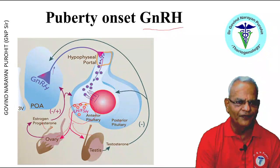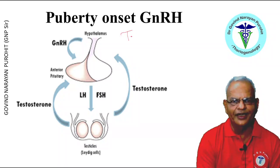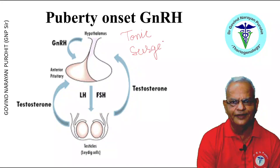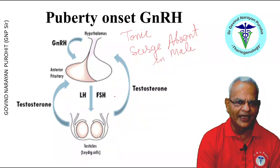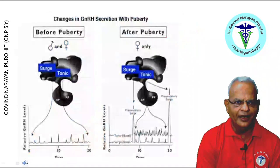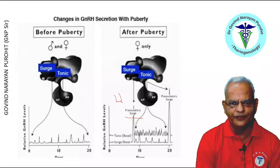The ovaries produce estrogen and the testes produce testosterone. The males do not have a surge center. The secretion of GnRH is of two types, as discussed in a previous class on hormones — a tonic release and a surge-like release. The surge-like release is absent in male animals because they do not require any mechanism such as ovulation. The surge centers are developed after puberty in females, and this leads to a pre-ovulatory surge of luteinizing hormone which causes ovulation in the heifers, and this rhythmically then continues.